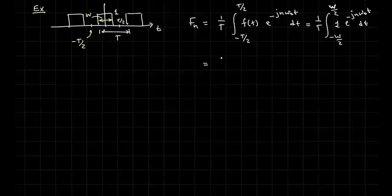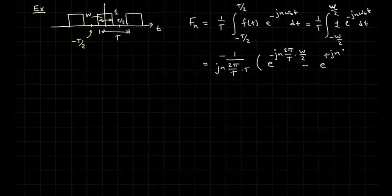So then we'll have minus 1 over Jn 2 pi over capital T times capital T, times E to the minus Jn 2 pi over capital T times W over 2, minus E to the minus Jn 2 pi over capital T times W over 2. So this will take some cleaning up.